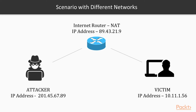Now consider the scenario shown in this diagram. The IP address of the attacker's system is a public address, and he is trying to exploit a vulnerability on a system which is not in the same network. The target system in this case has a private IP address and is NATed behind an internet router. So there is no direct connectivity between the attacker's system and the target system. By setting RHOST to 89.43.21.9, the attacker can reach only the internet router and not the desired target system. In this case, we need to adopt another approach known as client-side attacks.